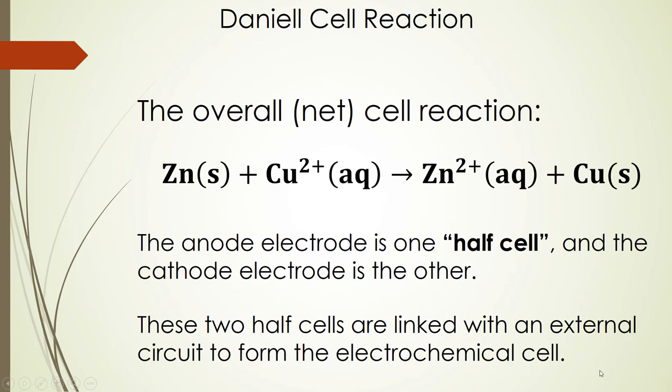The anode electrode is what we call one half cell, and the cathode electrode is the other. These two half cells are linked with an external circuit, and they form an electrochemical cell. It allows the electrons to flow from one half cell to the other half cell, and the anions are flowing in the opposite direction to preserve charge balance and not have charge buildup in one compartment or the other.